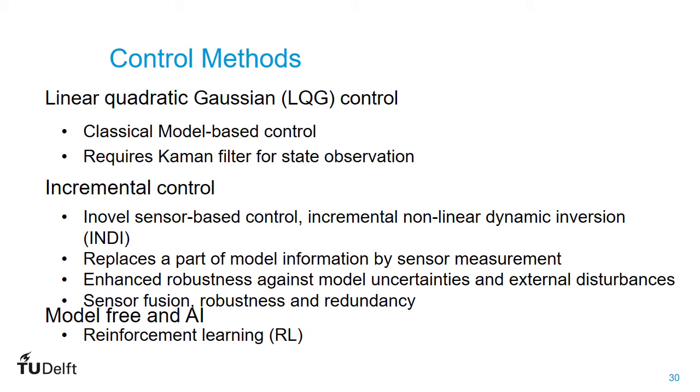Secondly, and more interestingly, we use a class of non-linear, incremental, and robust control methods. The INDI, which stands for incremental non-linear dynamic inversion, is a novel sensor-based control approach which can show great robustness against model uncertainties and external disturbances. The core of this method is incremental sensor feedback, which can replace a part of the model information with sensor measurements. For those that are familiar with this state-space formulation, it is the A matrix in a state-space model. Furthermore, our over-sensored approach allows us to make use of sensor fusion with additional sensor robustness and redundancy.